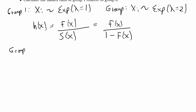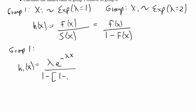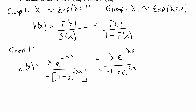For group 1, we can calculate the hazard function as follows. I'm going to plug in the PDF of an exponential distribution, which is lambda times e to the negative lambda x, over 1 minus the CDF of the exponential distribution, which is 1 minus e to the negative lambda x. This simplifies to lambda times e to the negative lambda x over 1 minus 1 plus e to the negative lambda x. Since 1 minus 1 is 0, we can cancel the e to the negative lambda x in the numerator and denominator, giving us just lambda.